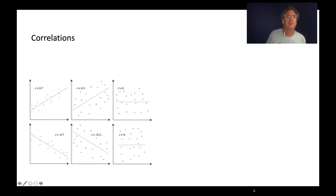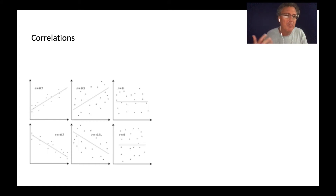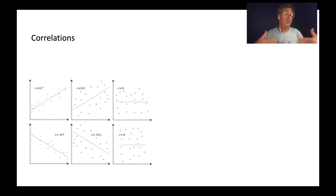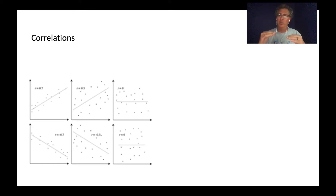Let's start with correlations. You guys know by now: r = 0.7, r = 0.3, r = 0, r = -0.7, r = -0.3. A typical correlation involves measuring two attributes and asking: as one attribute gets larger or smaller, what does the other do? If they go together it's a positive correlation; if one gets larger while the other gets smaller, that's a negative correlation. You can quantify how strong that correlation is, ranging from zero to one.